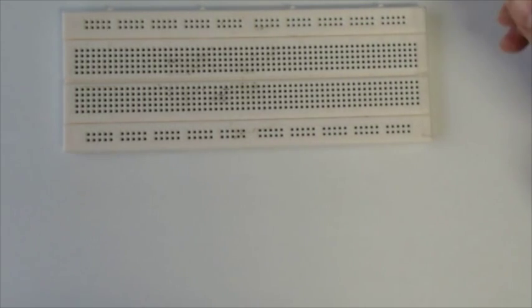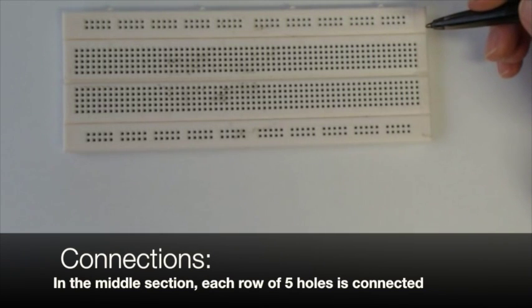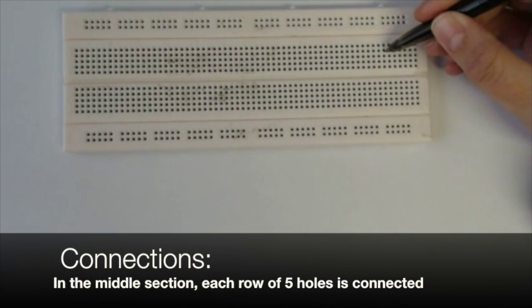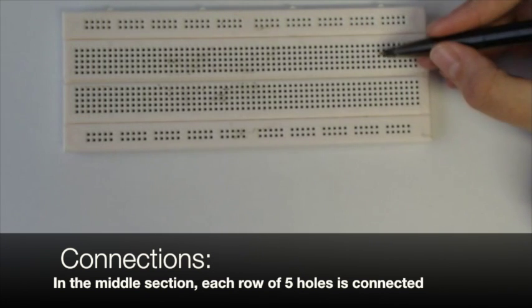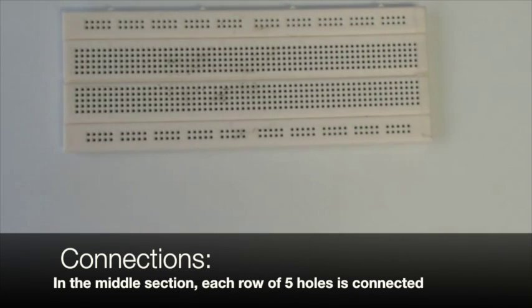In the center part, each row of five holes are electrically connected. That means that all the conductors that we stick into these holes will be connected. You can also think of these rows as a node where two or more circuit elements meet.